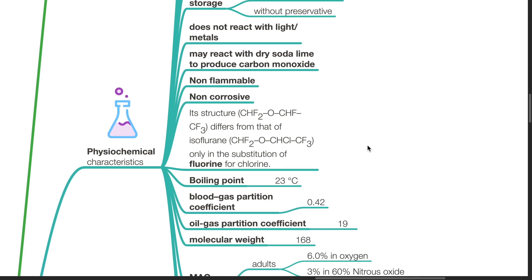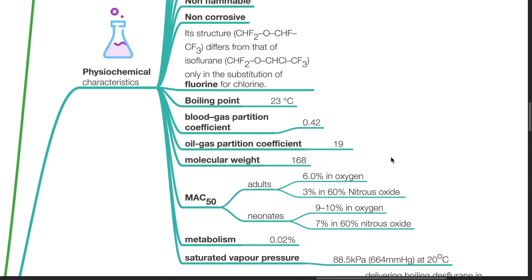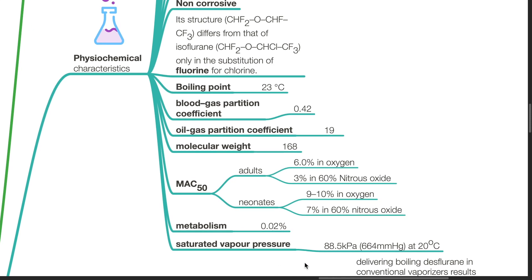Boiling point of desflurane is 23 degrees Celsius. Desflurane has a blood gas partition coefficient of 0.42 and an oil-gas partition coefficient of 19. Molecular weight is 168. MAC values in adults are 6.0% in oxygen and 3% in 60% nitrous oxide. In neonates, it is 9–10% in oxygen and 7% in 60% nitrous oxide. Metabolism is 0.02%. Saturated vapour pressure is 88.5 kPa or 664 mmHg at 20 degrees Celsius.